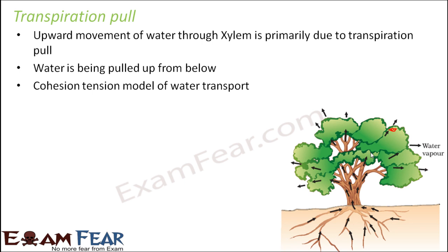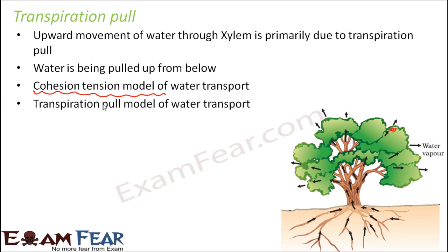This is also known as the cohesion tension model of water transport, because of the cohesive properties of water. When we talk about how water moves up in the xylem, you will get to know why it is called the cohesion tension model. It is also known as the transpiration pull model of water transport, because transpiration pull is the most important factor which makes water move in the upward direction.